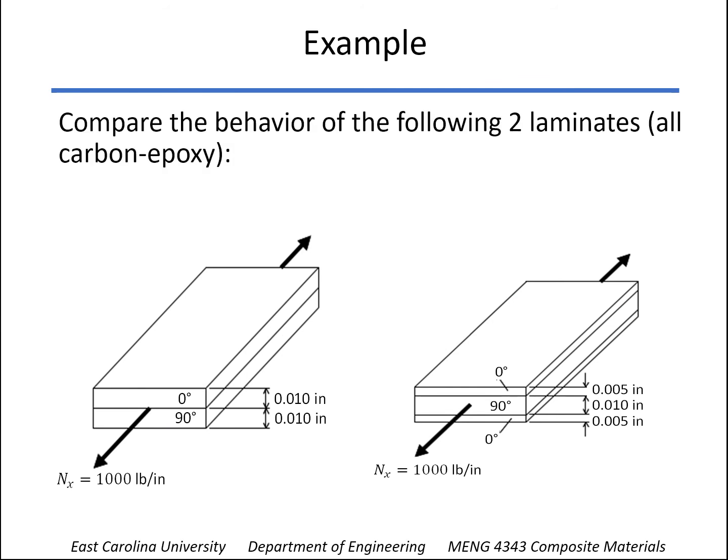But here's the example. We've got two laminates, and both of them are just made up of carbon epoxy. Keep it simple, zeros and nineties. And notice both of them are a total of two-tenths of an inch, that's going to be twenty-thousandths of an inch thick, equally between zeros and nineties.